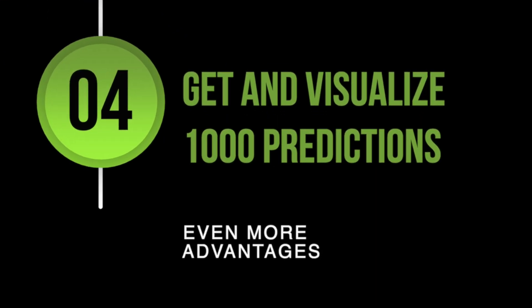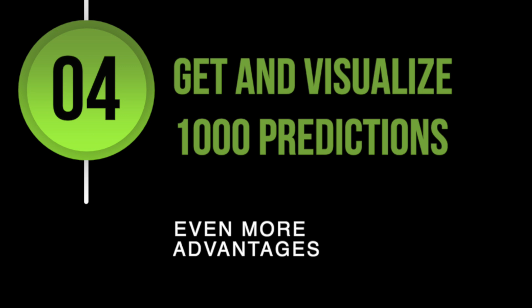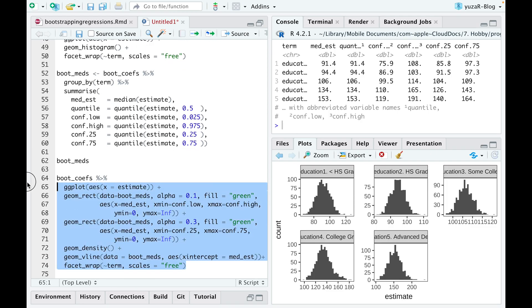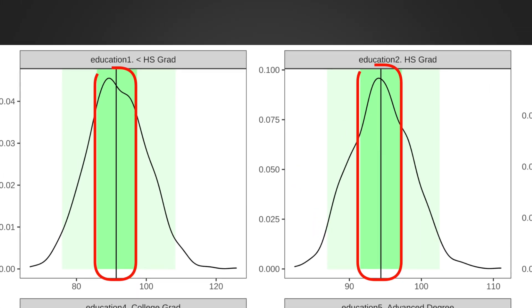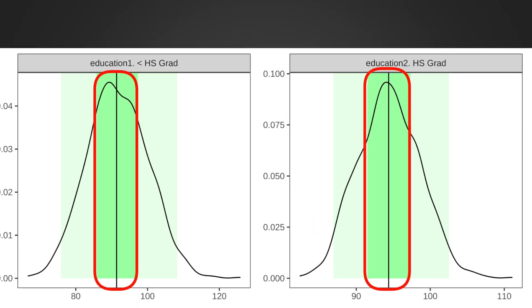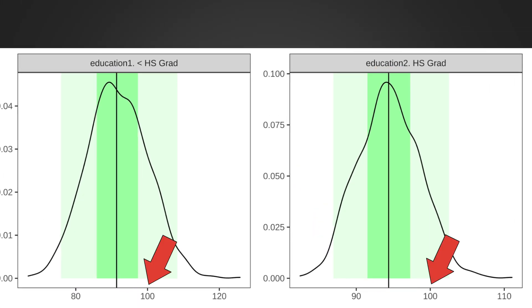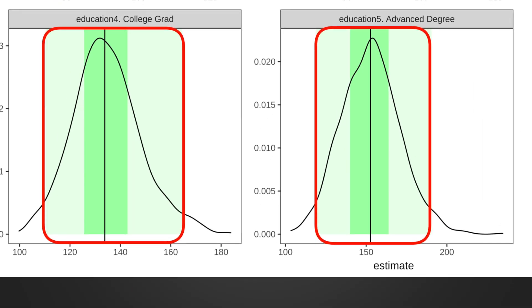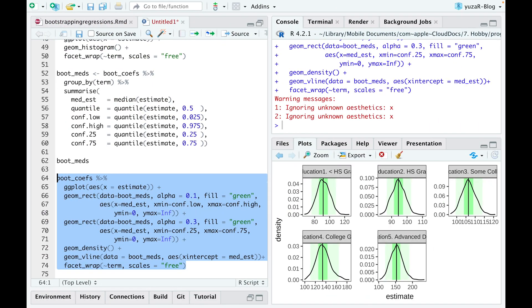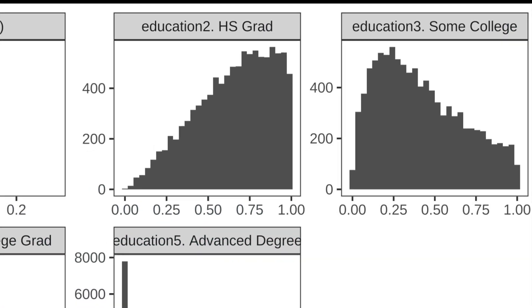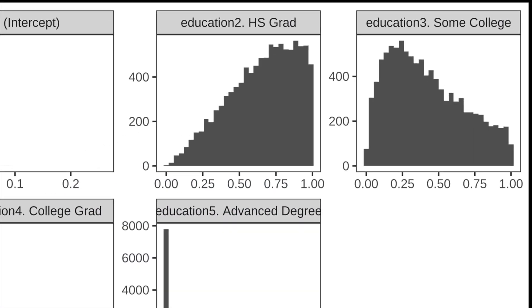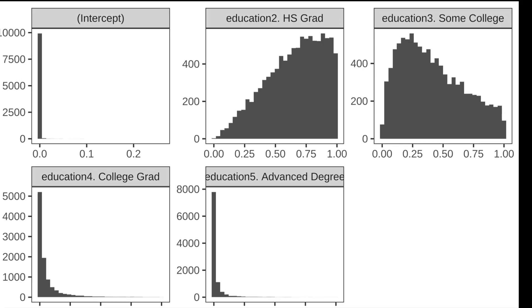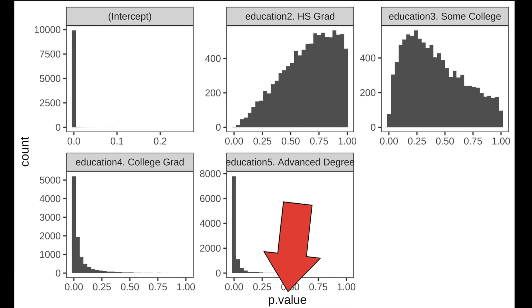We actually have more than four advantages of the bootstrap approach. If we plot our estimates, we can clearly see that 50% of people who did not finish high school will never reach a salary of 100,000, while 95% of folks with higher education will never earn below 100,000. So education matters. And what blew my mind even more the first time I learned bootstrap regression estimates is that you can even get a distribution of p-values.